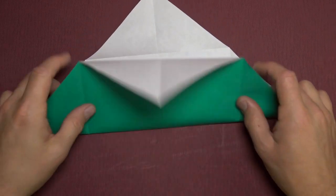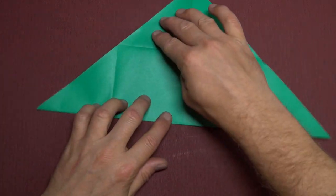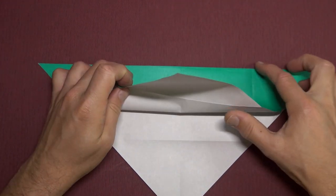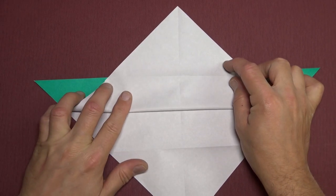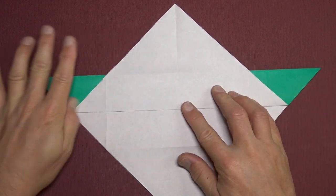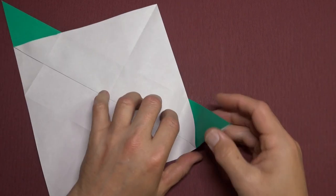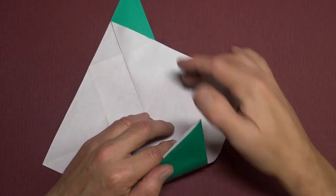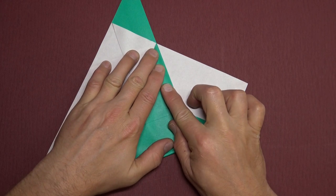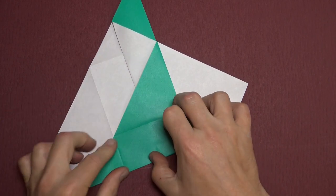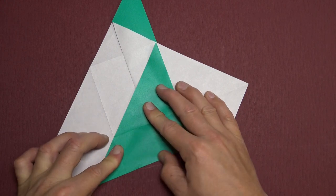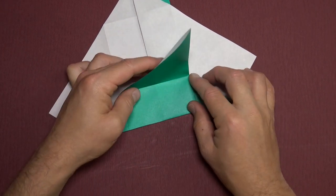And fold in half. Rotate. And fold the front flap up so that the crease aligns with the top edge. And fold this corner to this point. And fold it back on the existing crease.